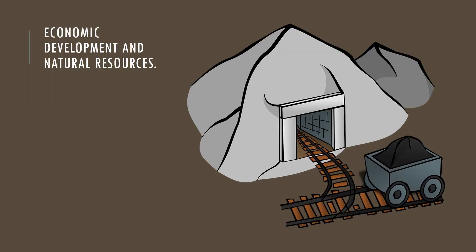Economic development depended on natural resources — things that come naturally from the earth, like oil, coal, and iron. The United States had a vast supply of natural resources, which helped the country grow economically. One major natural resource was coal, used to power locomotives and factories. We also saw forests cut down for lumber and construction, which unfortunately had a big negative effect on the environment.